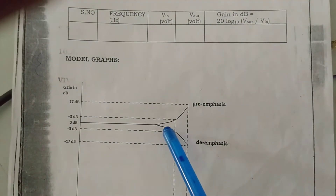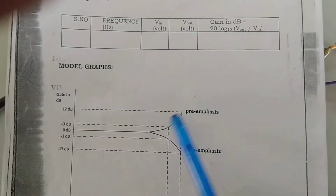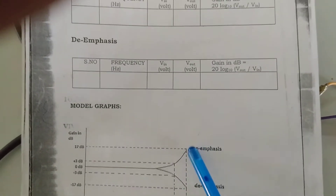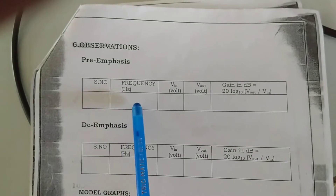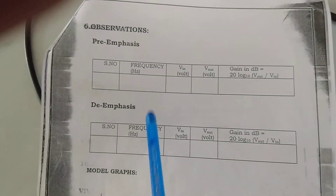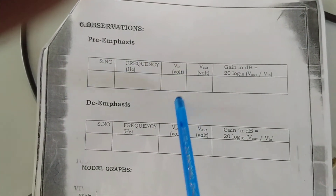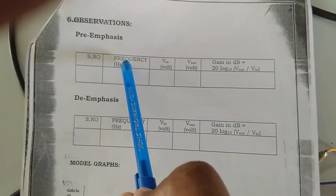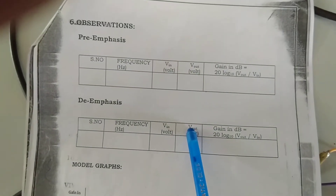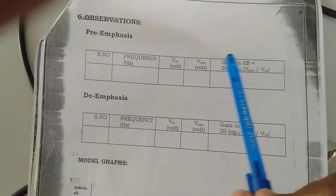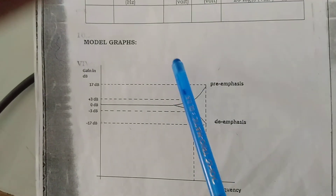For a smoother curve, take more frequency variations from 20 Hz to 20 kHz. Tabulate the frequency variation, the fixed input voltage of 2 V, the corresponding output voltage for each frequency change, and then calculate the gain as 20 log(Vout/Vin). Taking more samples gives a smoother frequency response curve. In this way we obtain the pre-emphasis frequency response.